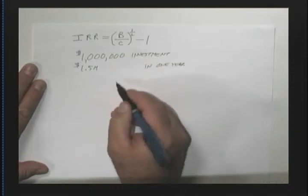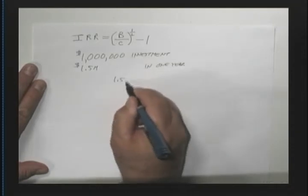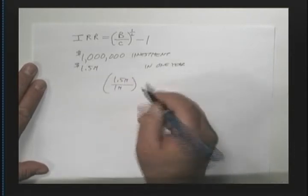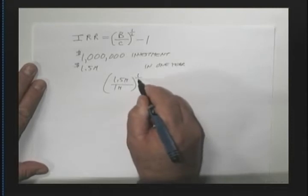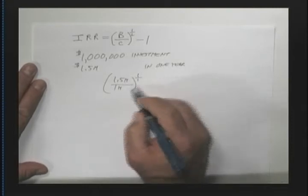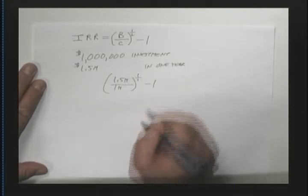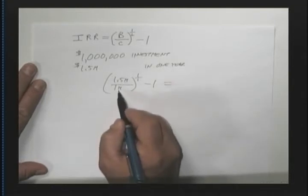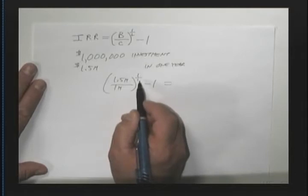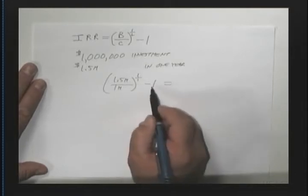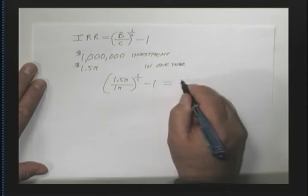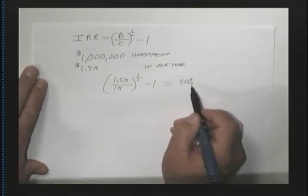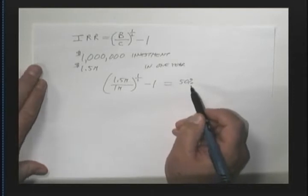Well, according to our equation here, the benefit is $1.5 million, divide that by $1 million, raise that to the power of one over one year, to the one, subtract one, and we see that this has got $1.5 divided by one is $1.5 raised to the one power, that's still $1.5 minus one, that's 0.5, which is 50%. That's got an internal rate of return of 50%, all right?